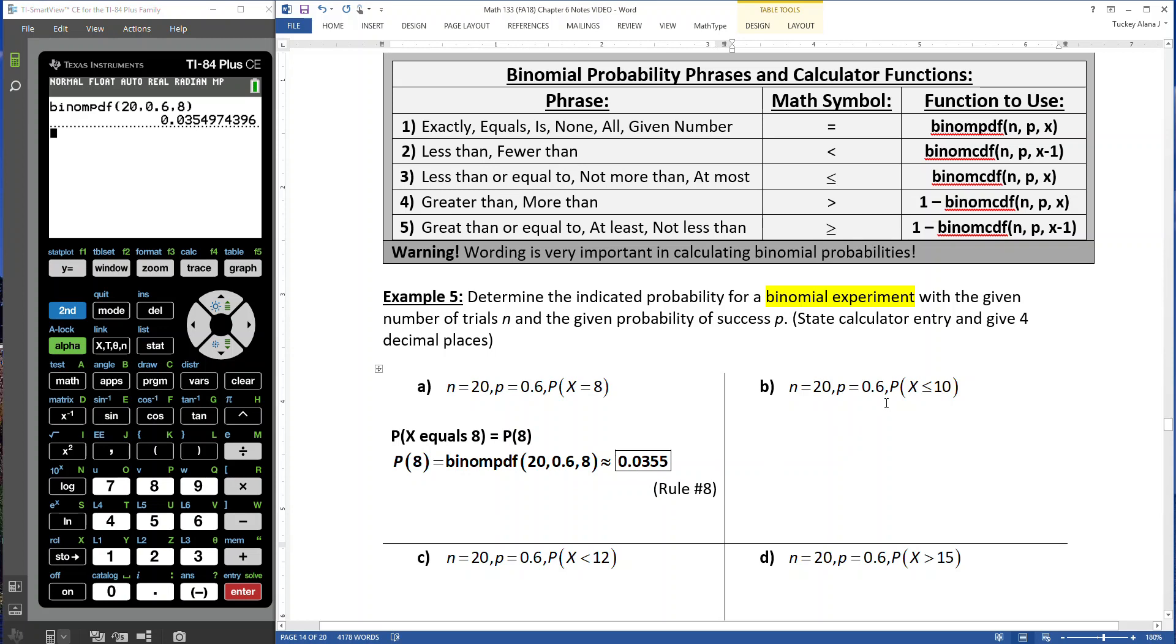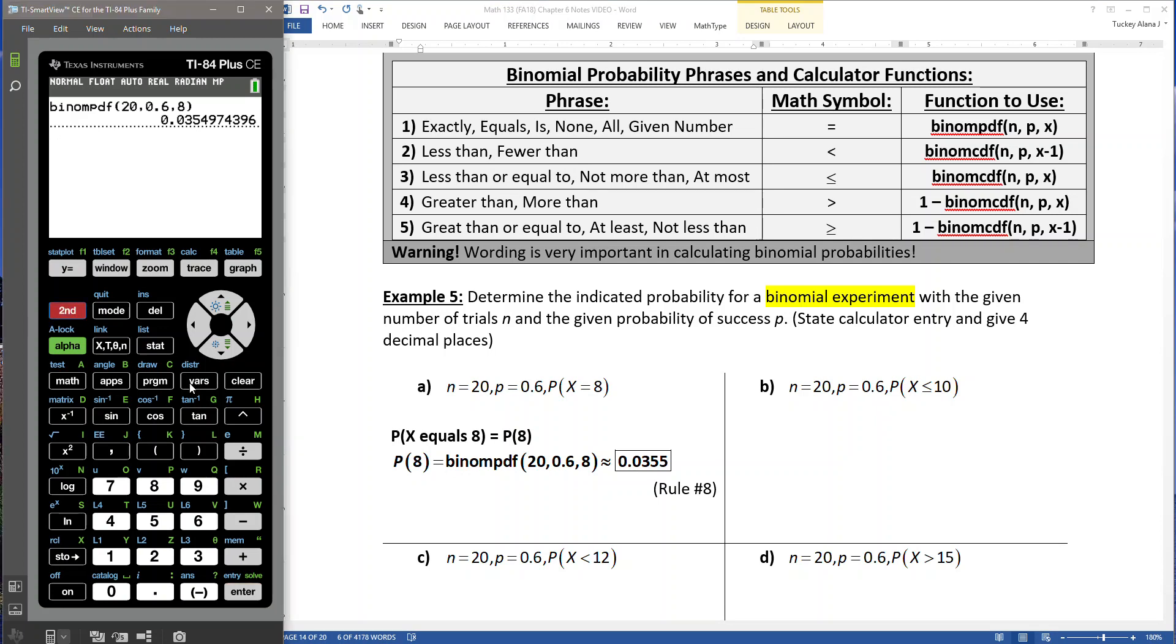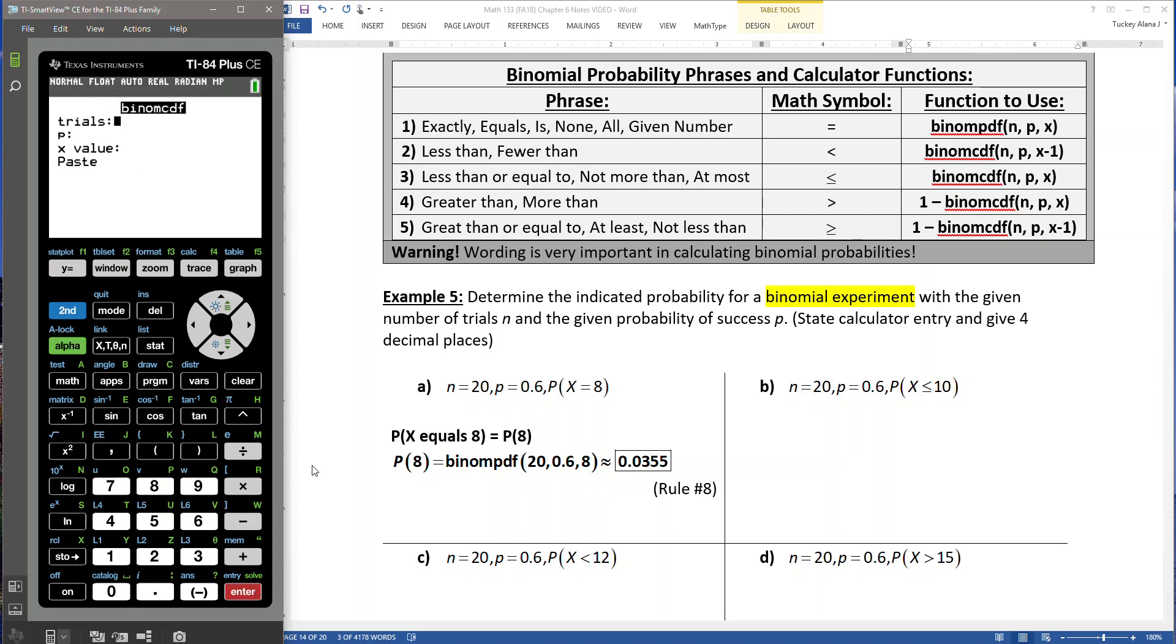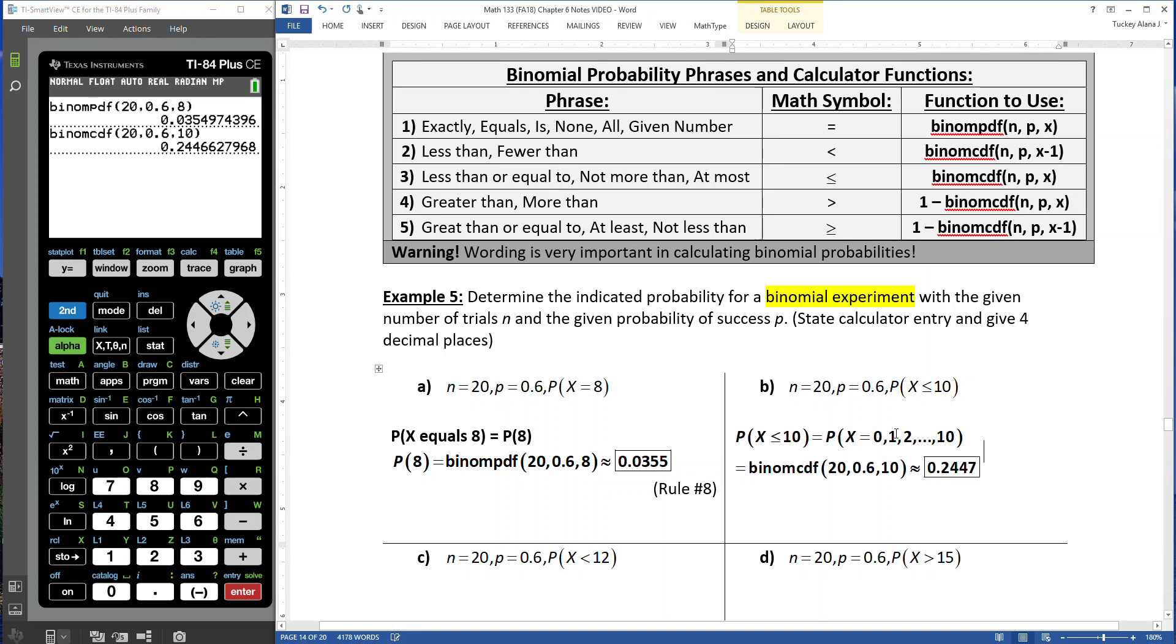Now for the next one, n is 20 again, p is 0.6, and I can see the symbol is less than or equal to. That's rule number 3. I'm saying less than or equal to in English, which means, how low can x go? Well, 0 is as low as it can go. So 0, 1, 2, 3, all the way up until 10. That would be binomial CDF. According to this rule, I use the value I was given, which is 10.